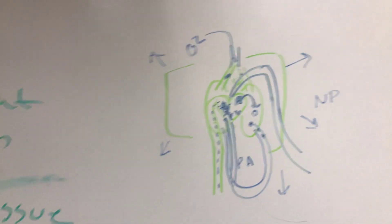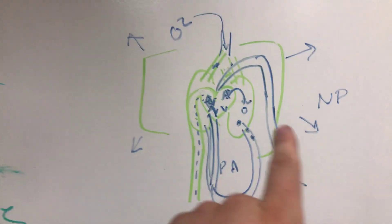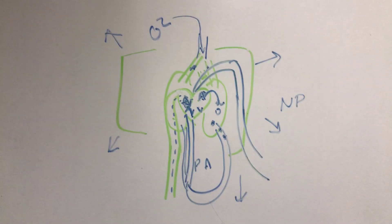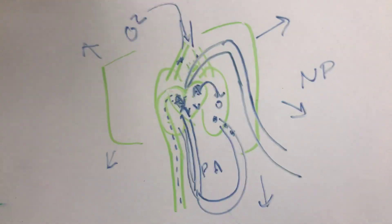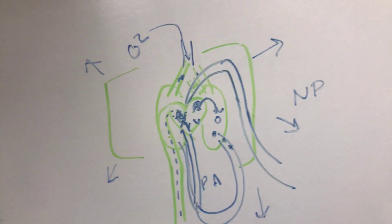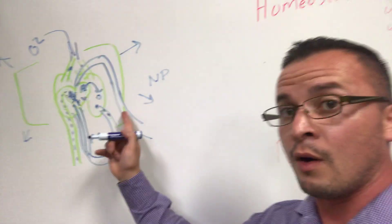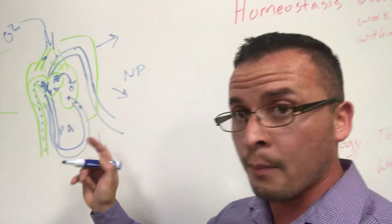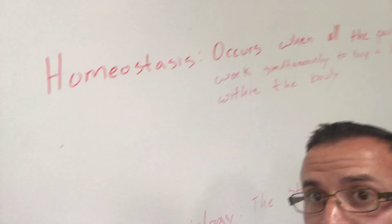So if every single body part and cell in your body is working together appropriately — they're working well — then you have what's called homeostasis.